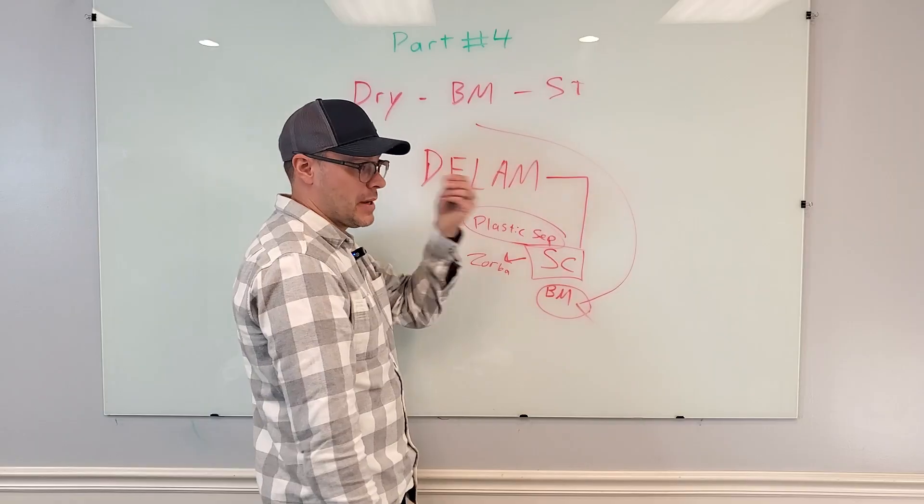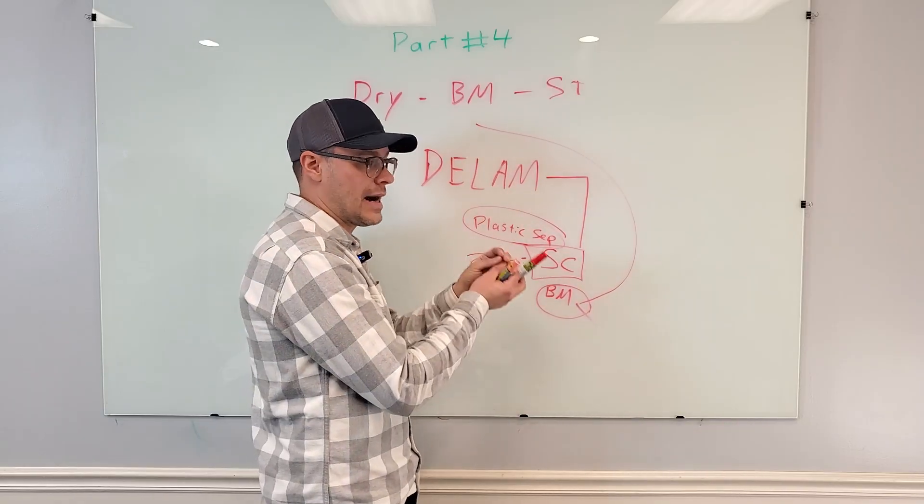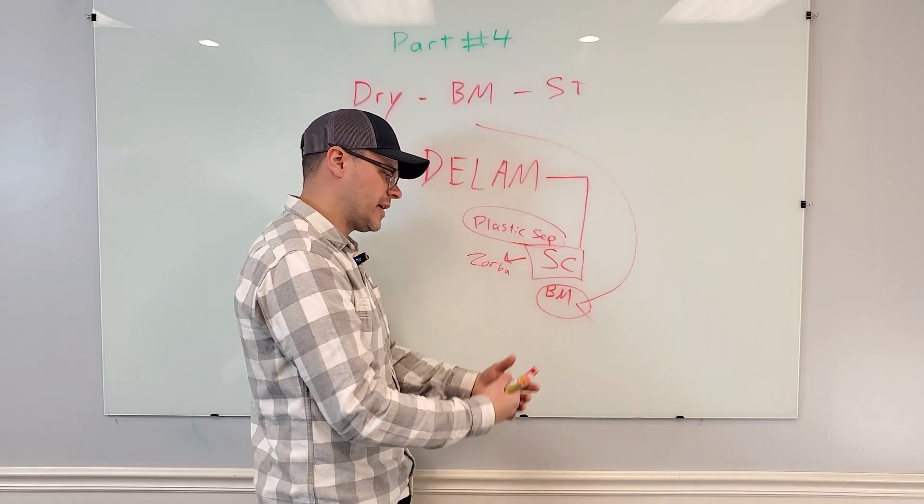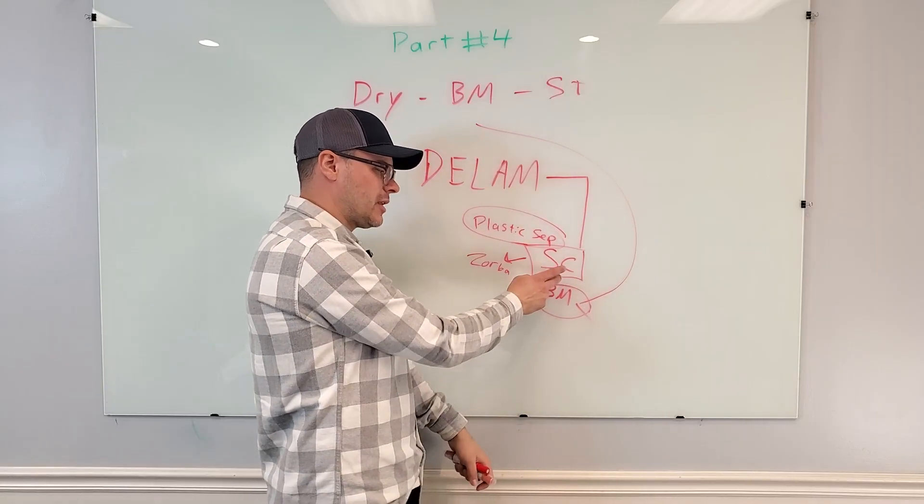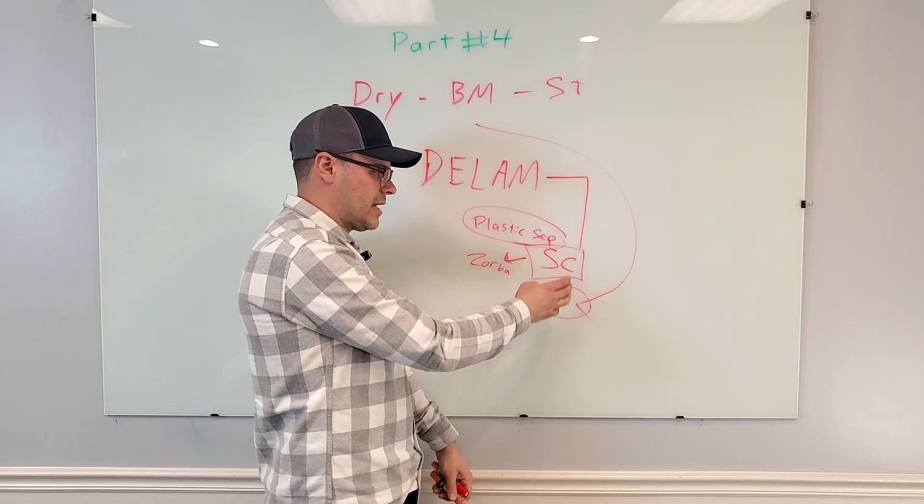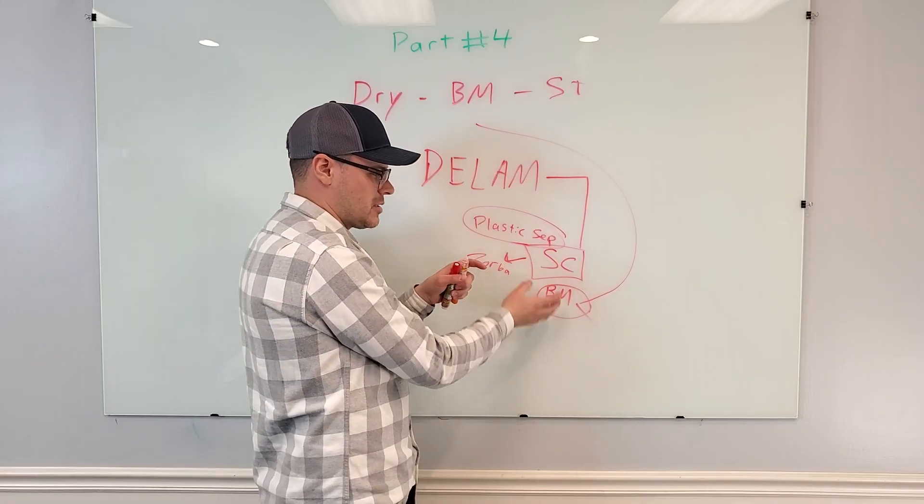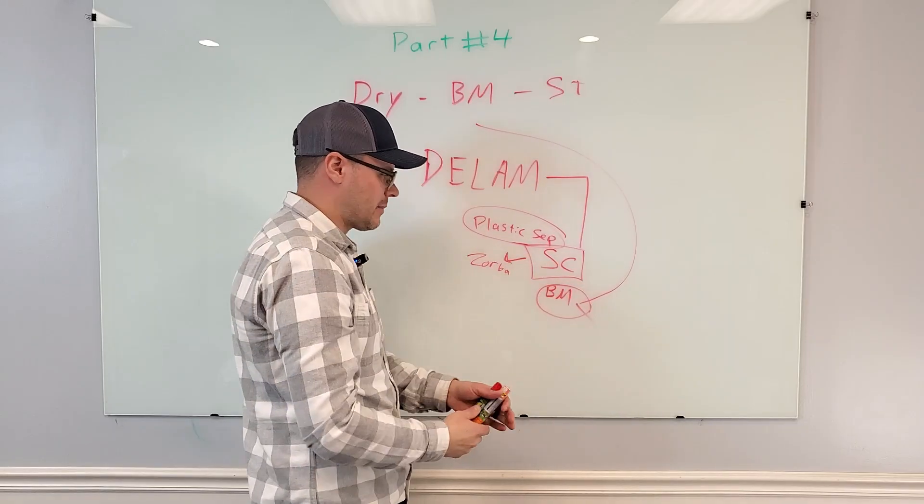That delam mill makes copper balls, aluminum balls, and in doing so it creates some copper fine dust and some aluminum fine dust which can find its way in the black mass. We typically use a tighter screen here to eliminate that, closer to 80 mesh. 60 mesh works good too to eliminate as much of that as possible and have mostly black mass.